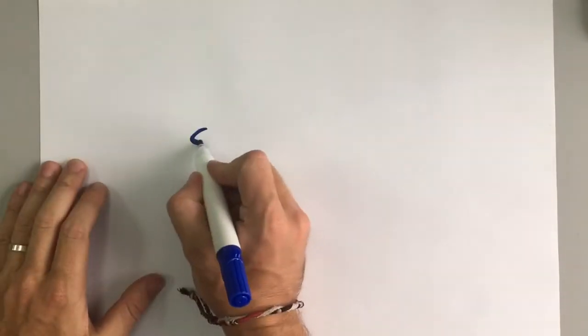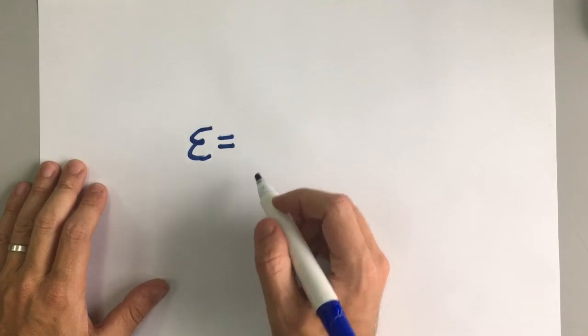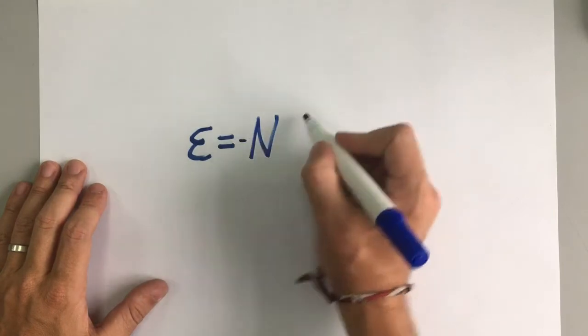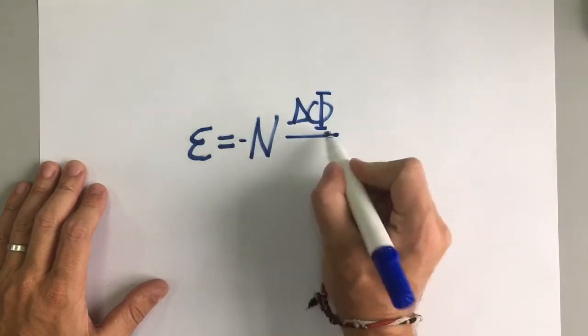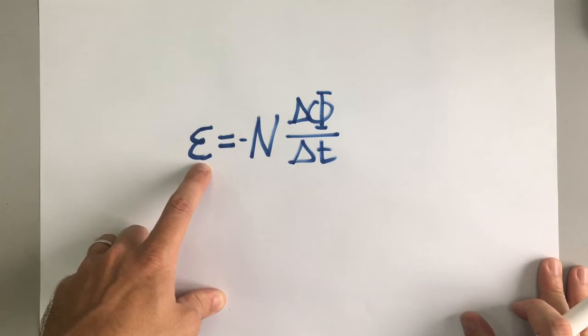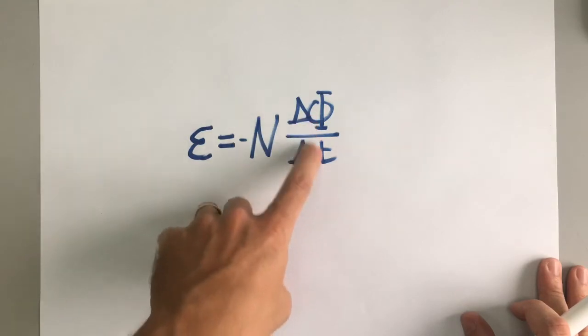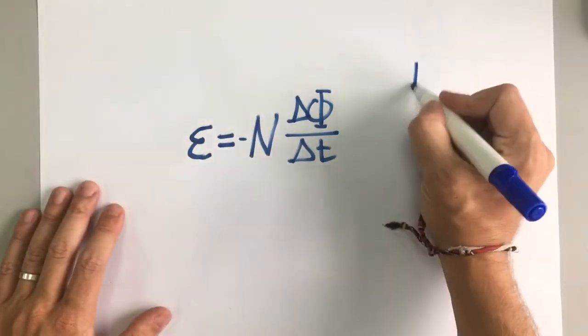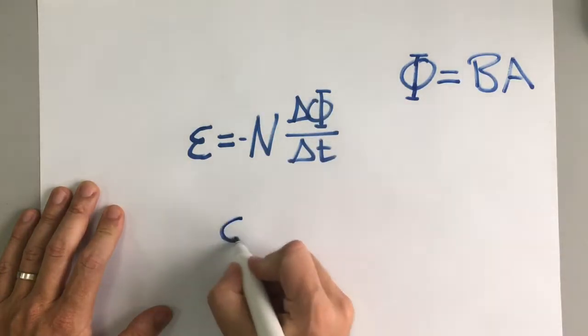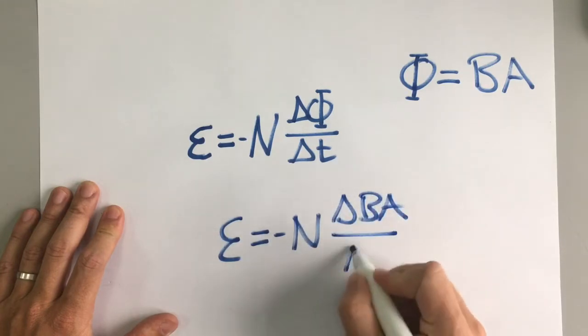Now Faraday's equation links this to how much EMF, electromotive force, is produced by a changing magnetic flux. Faraday's equation in your data booklets is represented like that. The EMF produced by a changing flux is equal to the number of turns times by the rate of change of flux. Now remember also that flux is equal to BA, so we could rearrange this equation to say that.